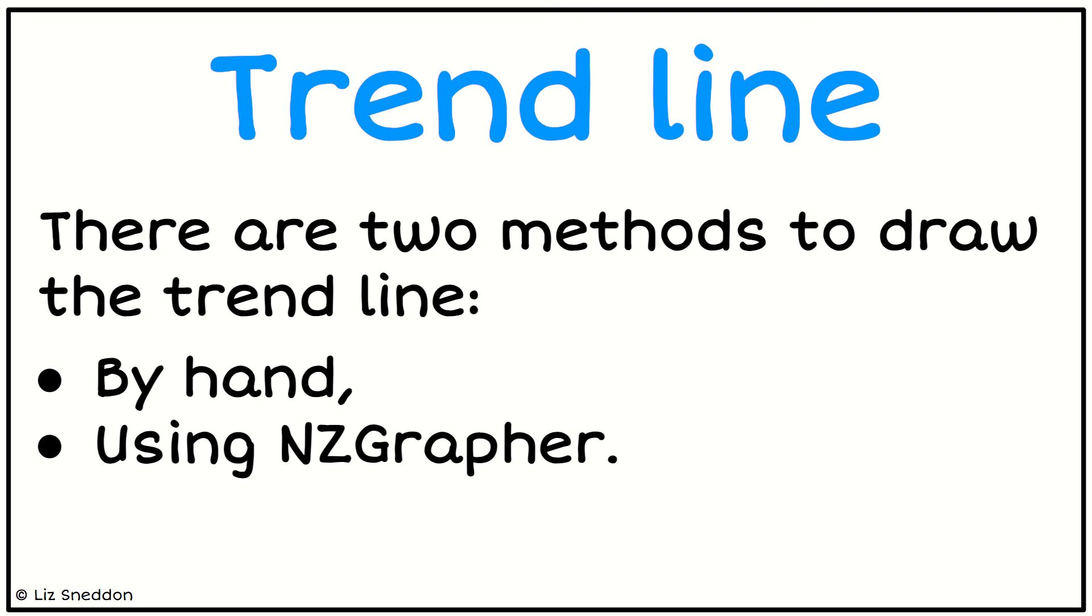So there's two methods that we can use to draw the trend line. One of them is by hand, and one of them is using NZGrapher. And I'll go through both methods, because often it's quite useful to be able to start by drawing by hand, so it builds your understanding of what the trend line actually is.